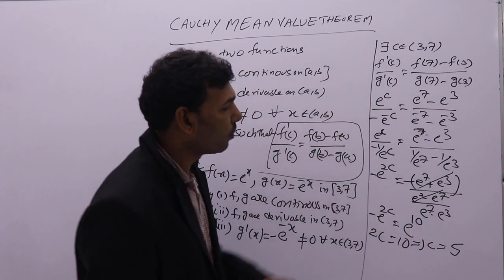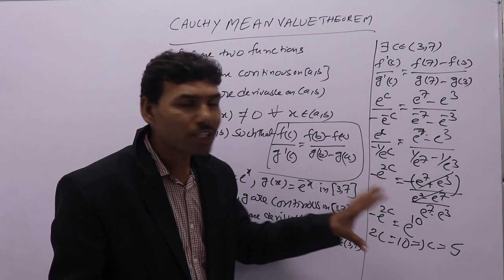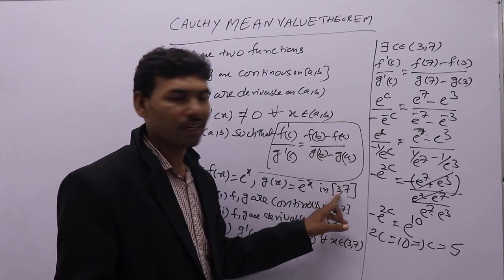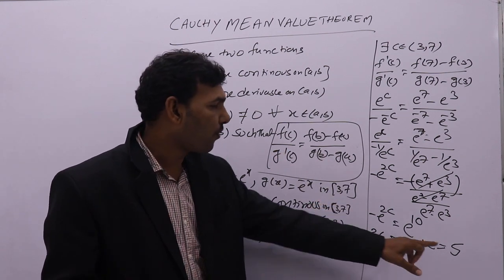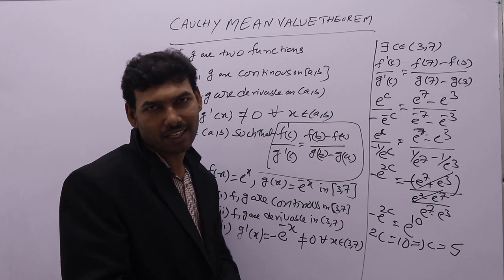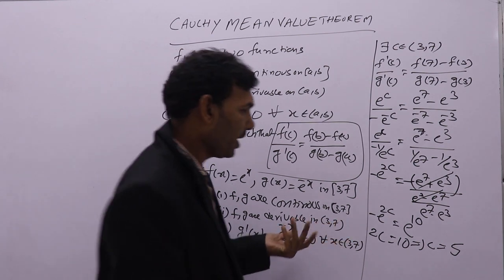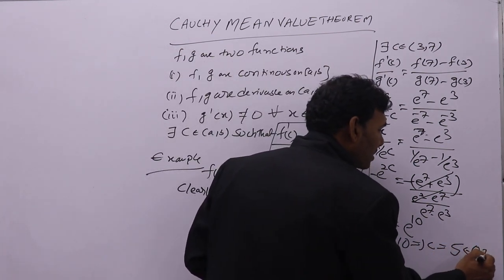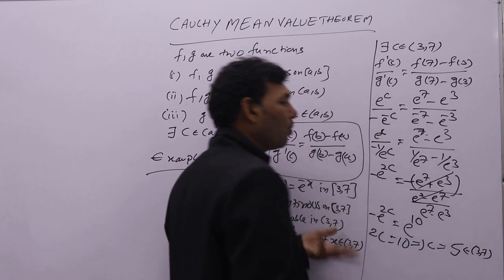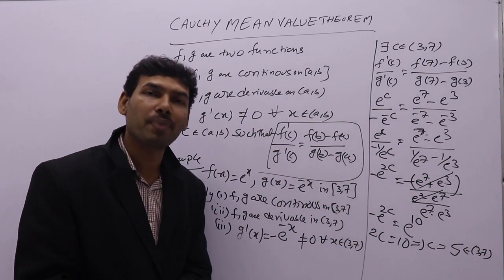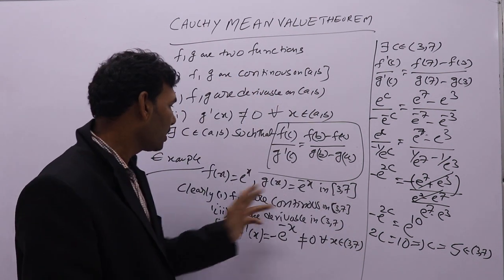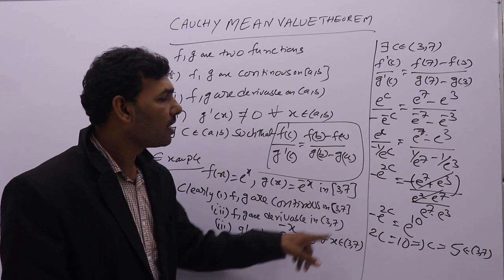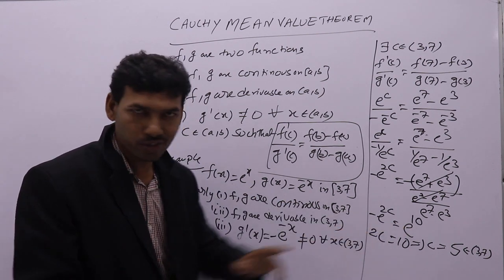We need to verify that c lies within the given interval. The c value is 5, and 5 lies between 3 and 7. Therefore, Cauchy mean value theorem is applied on these two functions and verified. We also found the Cauchy c value.